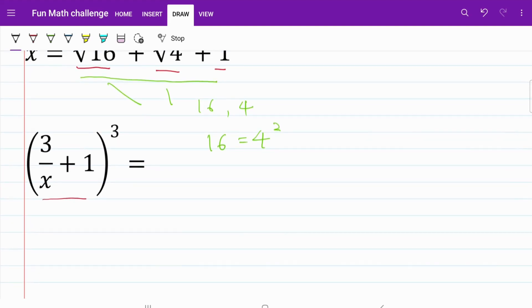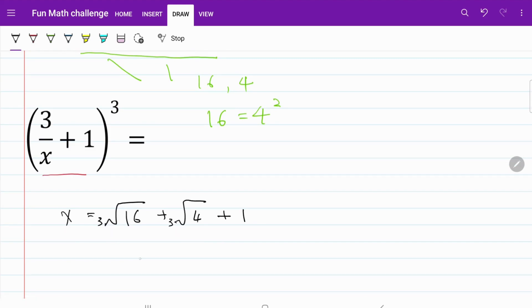Let's copy down what I have. I have x equal to cube root of 16 plus cube root of 4 plus 1. If I want to do a substitution, I notice that 16 is equal to 4 squared, implying that the cube root of 16 is equal to the cube root of 4 squared.